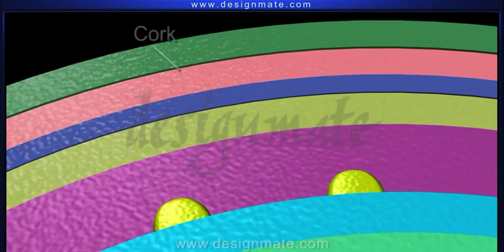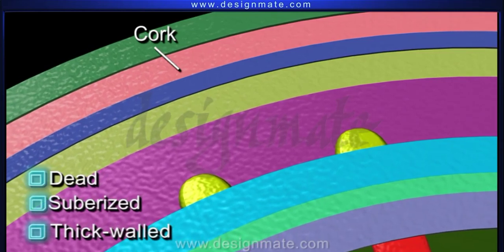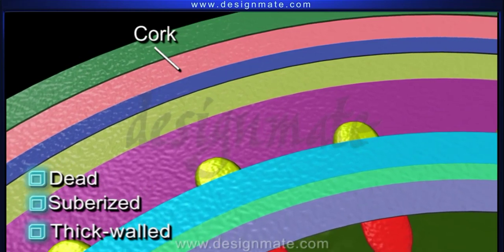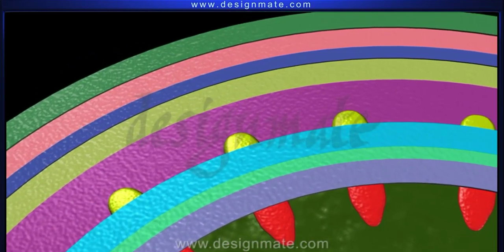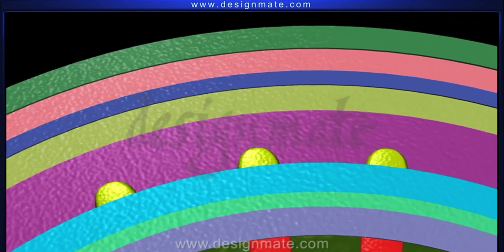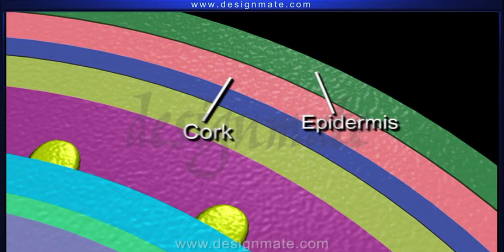The cork cells are dead, suberized, thick-walled, and do not allow the loss of water through the stem. The outer tissue, that is epidermis along with cork itself, constitutes the bark of the plant.